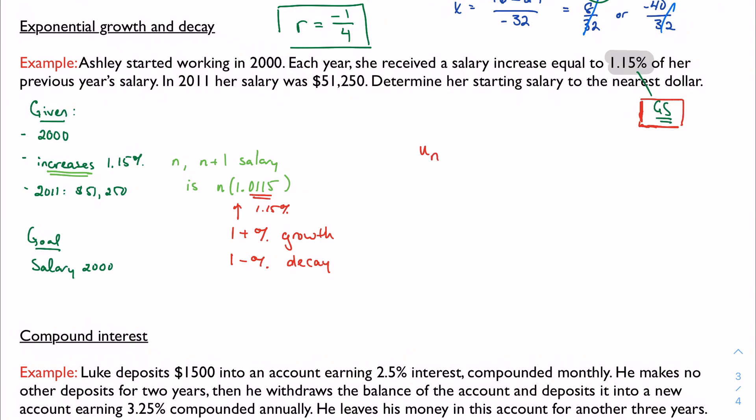Un, her salary in year N, and we want N equal to 1 to represent the year 2000. So I want to be careful here with that type of notation. So Un is U1 times R to the N minus 1. And we don't know her starting salary, but we do know the common ratio, which is 1.0115.